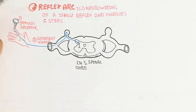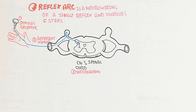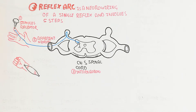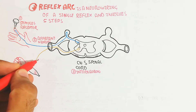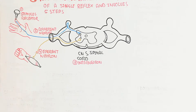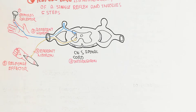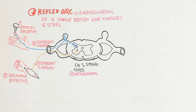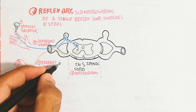A stimulus — such as a needle touching the hand — is received by a receptor. The afferent (sensory) neuron sends the signal toward the central nervous system. After processing in the central nervous system via the interneuron, the efferent (motor) neuron carries the signal back, leading to muscle contraction through the neuromuscular junction.